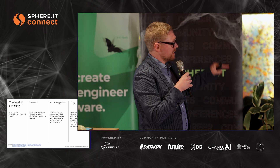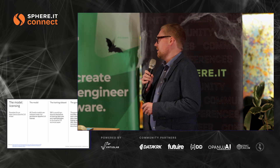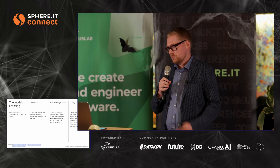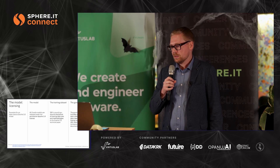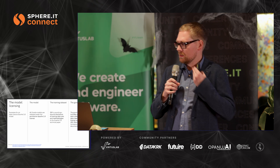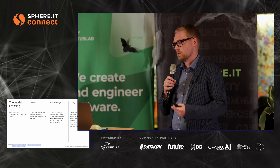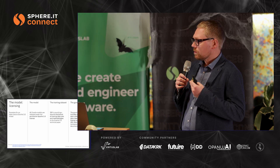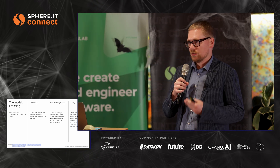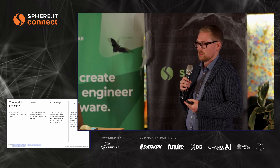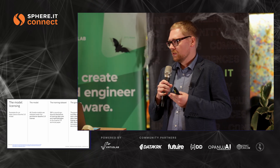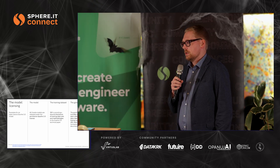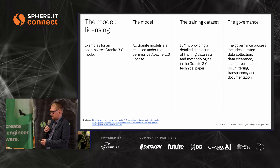Here are examples of the Granite model. The latest version was released this week, and that model contains a permissive Apache 2 license, so you can use it for commercial use. Beyond that, we also open-sourced the training datasets and the methodologies for data preprocessing, so we can be sure that — for example, for code generation — that model was trained on code that allows commercial use, and you can check the governance process.